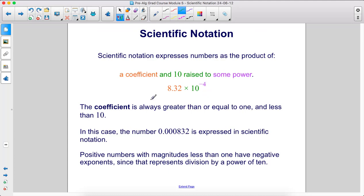Here, remember, the coefficient is always greater than or equal to 1, but less than 10. In this case, we have the number 0.000832 expressed in scientific notation. Positive numbers with magnitudes less than 1 have negative exponents, since that represents division by a power of 10.